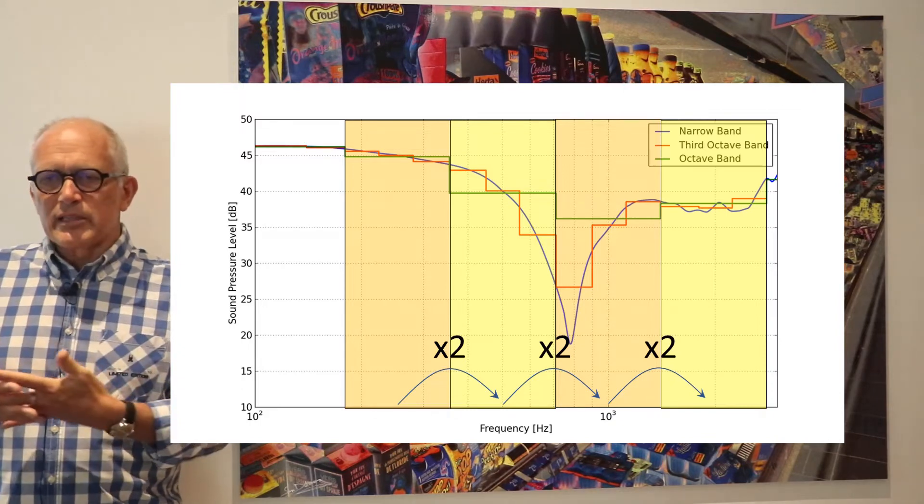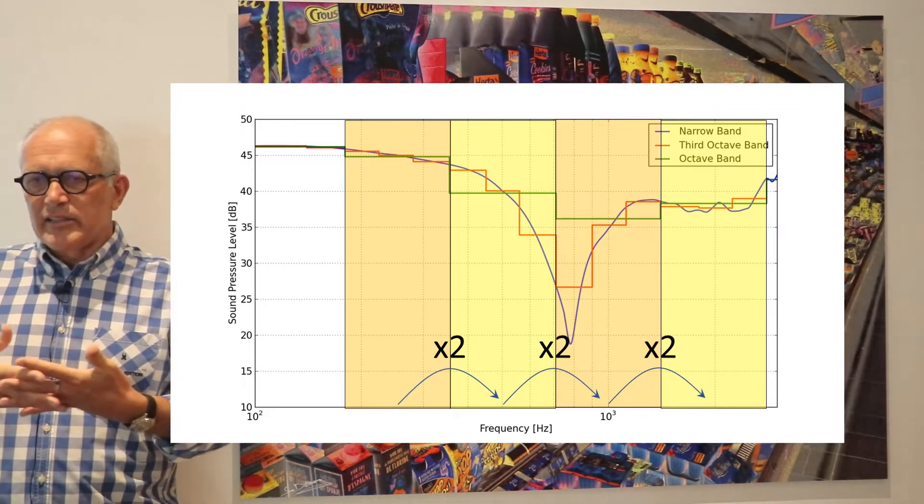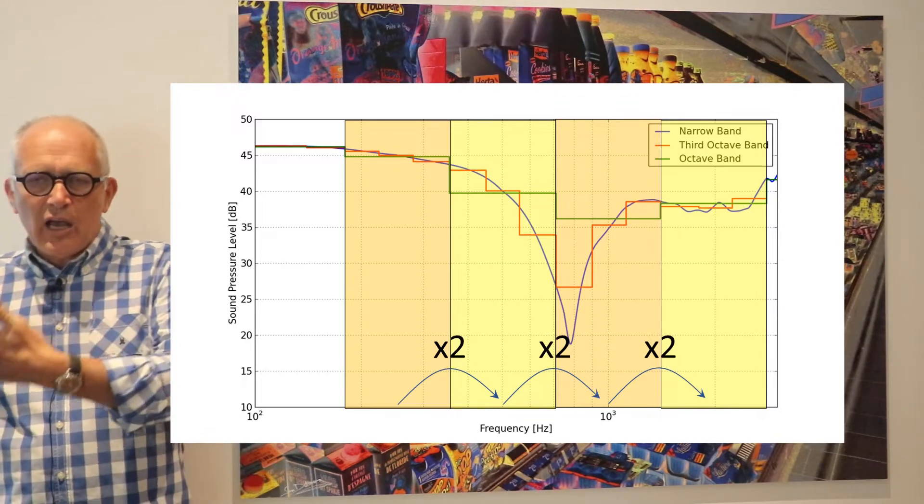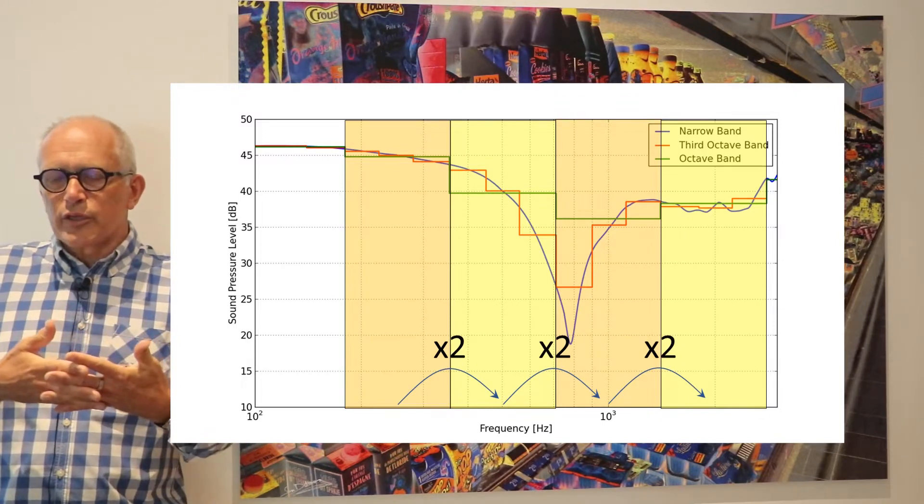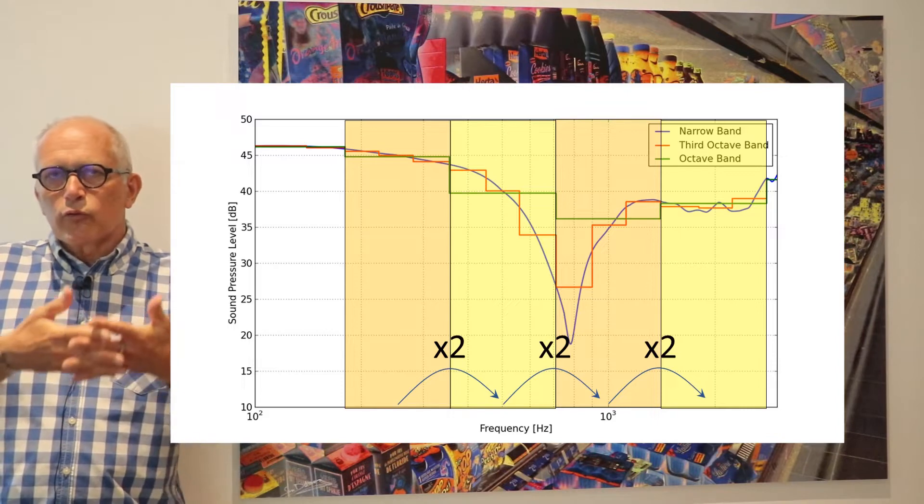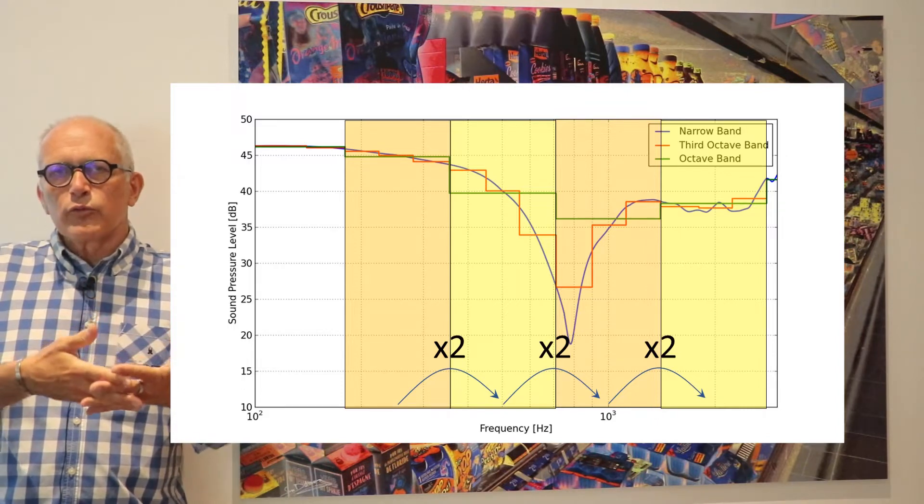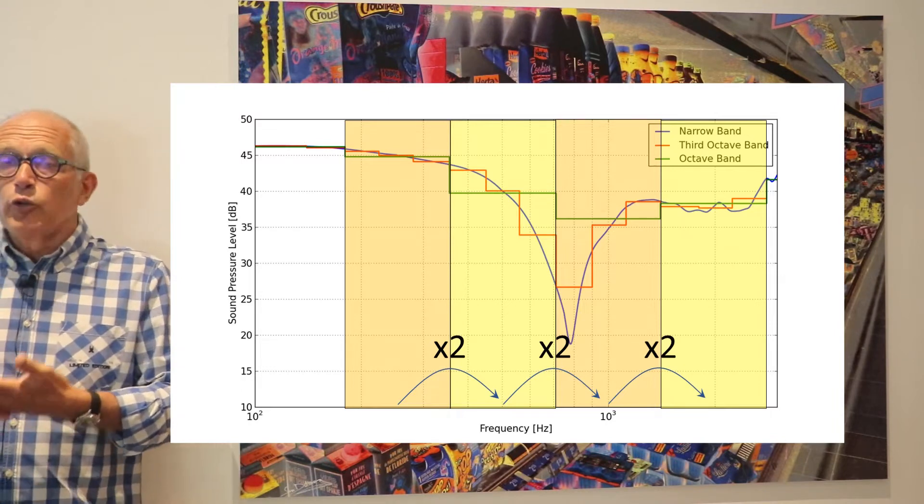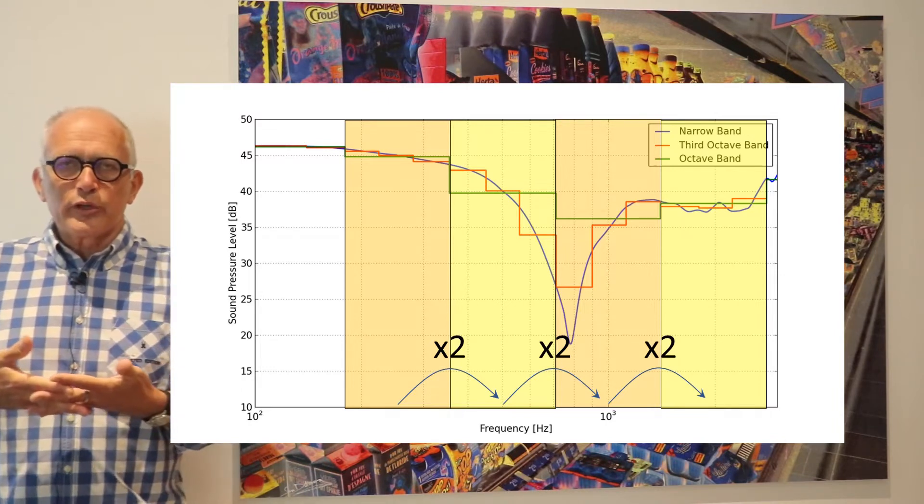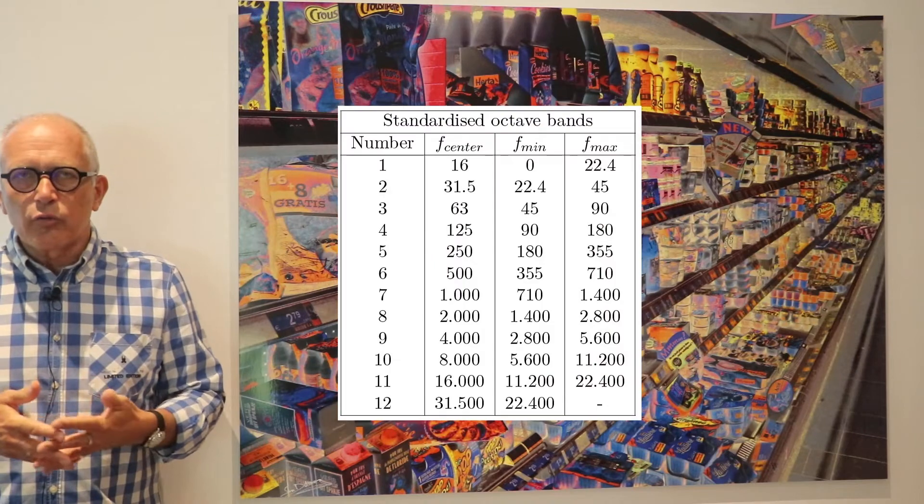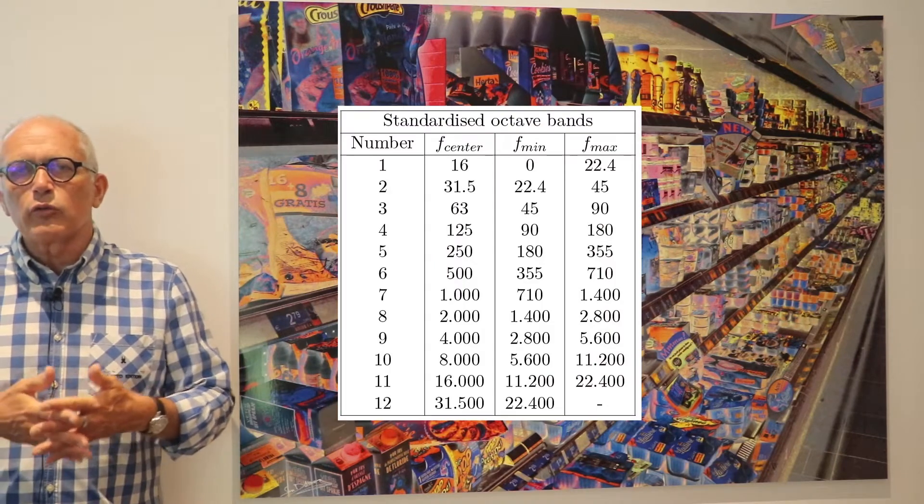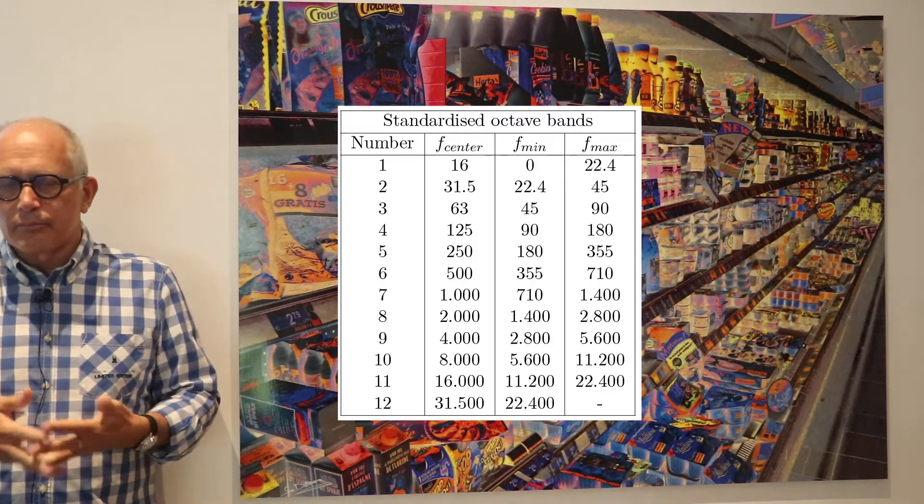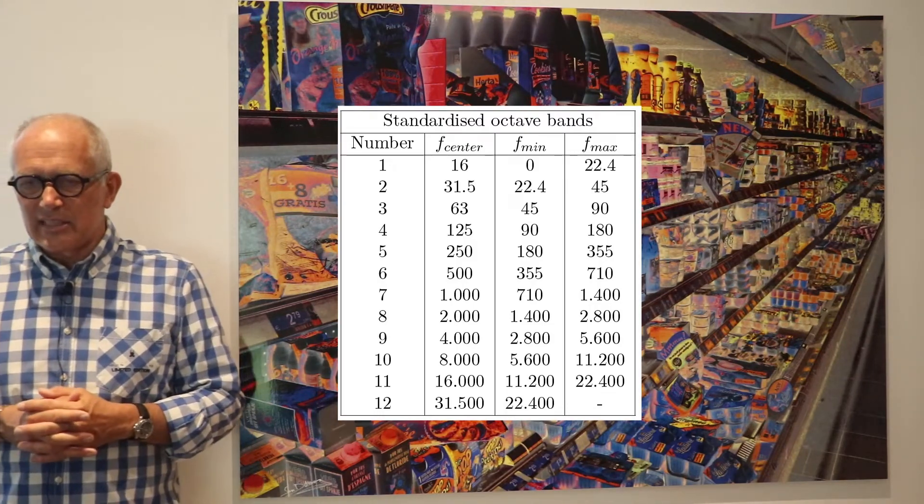So the octave bands have been standardized and they are defined by their lowest frequency, highest frequency, and center frequency. To go from the center frequency of one band to the center frequency of the next, you just have to double the frequency. Well, for different historical reasons in the standard, it's not for lowest frequency exactly a doubling, but in principle that's the idea.